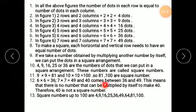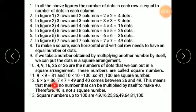And 40 comes between 36 and 49. If I have 6 dots rows and 6 dots columns, then 36 dots will be arranged. But if I have 7 dot rows and 7 dot columns, then I will need 49 dots. So all the numbers between 36 and 49 — that is 37, 38, 39, 40, all the way till 48 — come between 36 and 49.